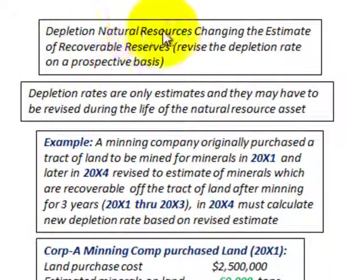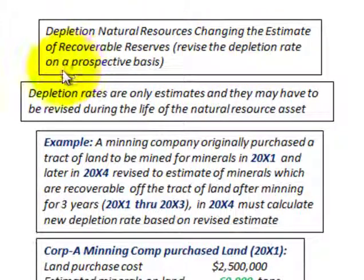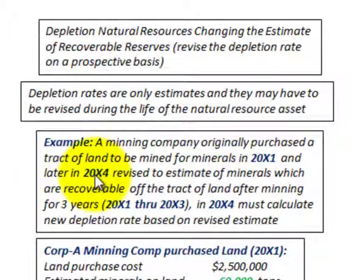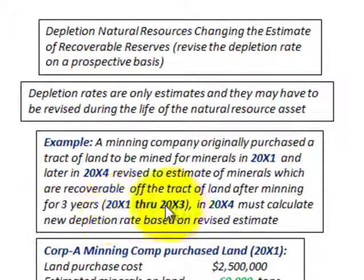What we're going to be looking at is depletion of natural resources, where we're going to be changing the estimate of recoverable reserves and revising the depletion rate on a prospective basis. Depletion rates are only estimates and may have to be revised during the life of a natural resource asset. Our example is a mining company that originally purchased a tract of land in 20x1, and later in 20x4 revised the estimate of recoverable minerals after mining for three years (20x1 through 20x3). In 20x4 they must calculate a new depletion rate based on this revised estimate.